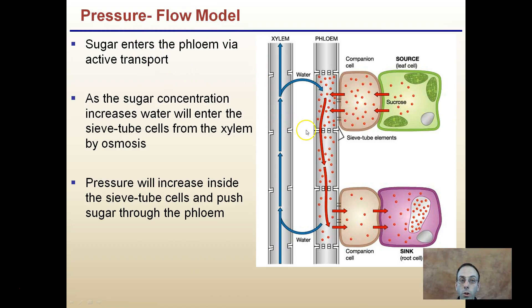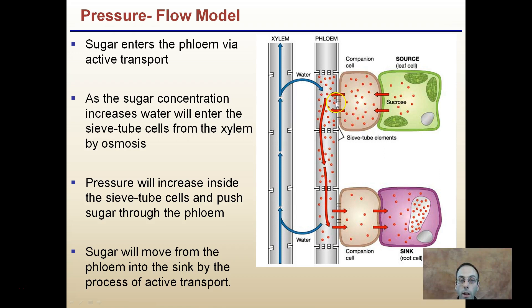The pressure flow model: sugar enters the phloem via active transport — we are actively adding our sucrose molecules. As the sugar concentration increases, water will enter the sieve tube cells from the xylem by osmosis. The pressure will then increase inside this area and push the sugar through the phloem, and sugar will move from the phloem to a sink by active transport. As sugar is removed, water moves back across. Remember, our xylem contains minerals as well, helping drive water movement through osmosis.